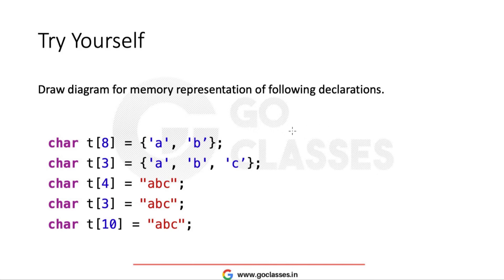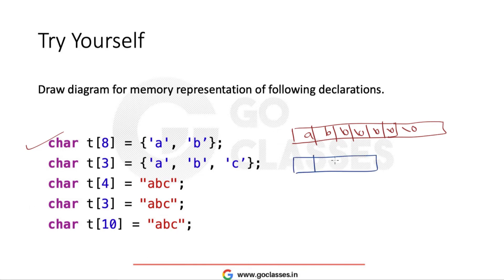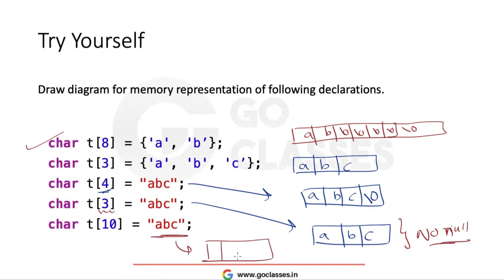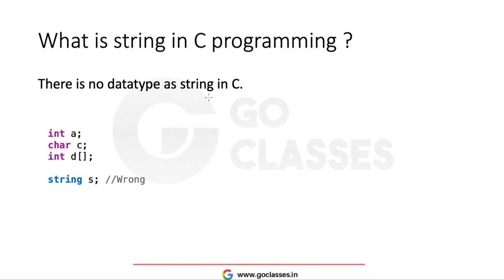Let's try this by ourselves. In the first case, t[8] = {'a','b'} means an array of size 8; first two characters are a, b, and the remaining are null characters since null is the default. An array of size 3 with 'a','b','c' will have no null character. An array of size 4 with 'a','b','c' will have a, b, c, and the last one is null. With size 10 initialized to 'a','b','c', the first three are a, b, c and everything else is null character.